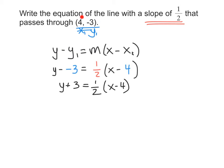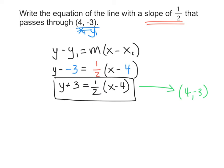Just to make sure you see this — when we were graphing, we would take the equation and write our point from the x1 and y1 values. We would always take the opposite of those values: so instead of negative 4 in the equation, we write positive 4 as the x-coordinate, and instead of positive 3, we write negative 3 as the y-coordinate. That gives us back the original point (4, negative 3) on the line. So we have written an equation with a slope of 1 half that passes through (4, negative 3).